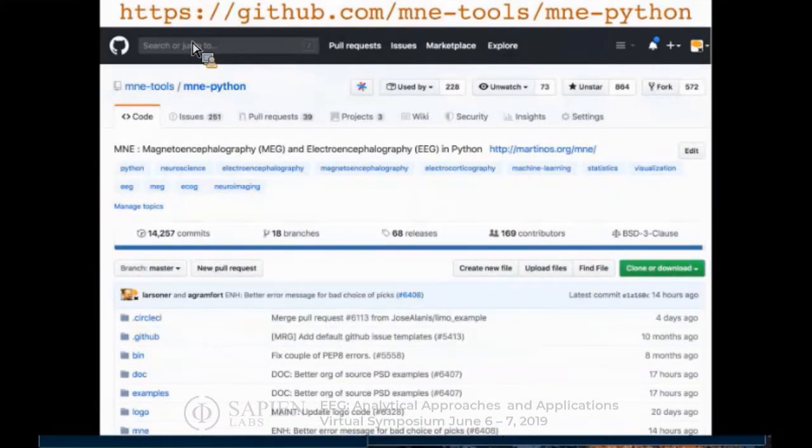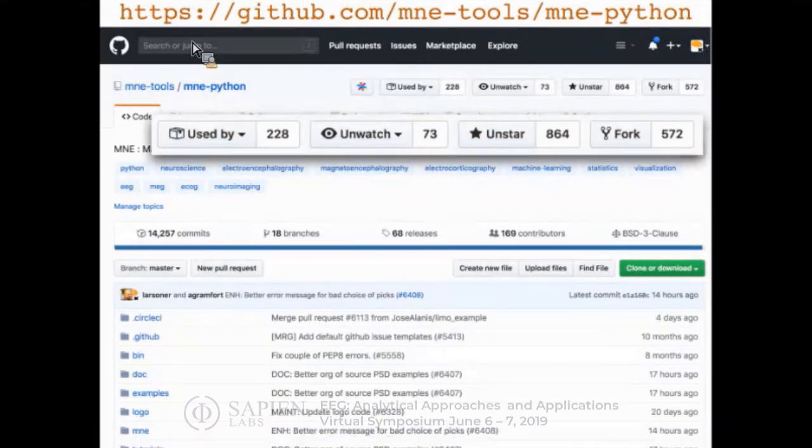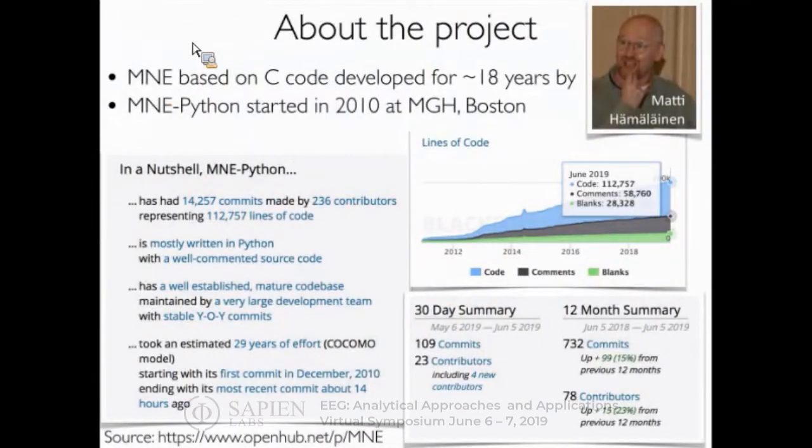MNE Python is really developed in an open way. It started on GitHub already in 2010, very early. It's a fairly rich project in its number of contributors. As you can see, you have almost 170 different people who have contributed to the project since the beginning. It's used by 220 other projects on GitHub, more than 500 people have forked and made their own modifications, and almost a thousand people are watching or starring the project.